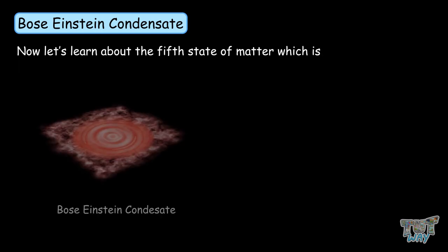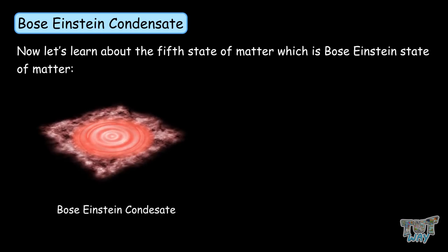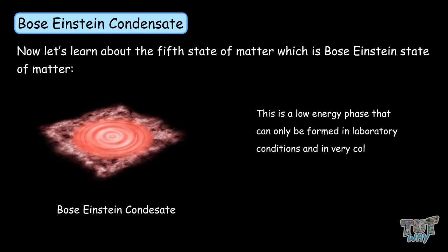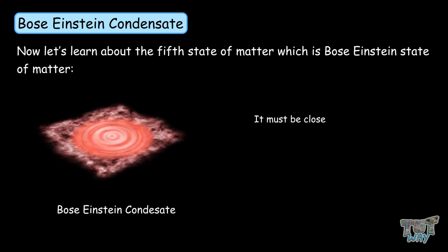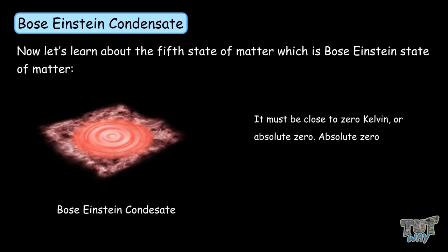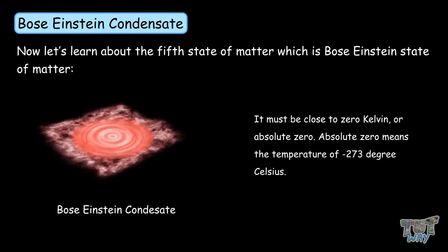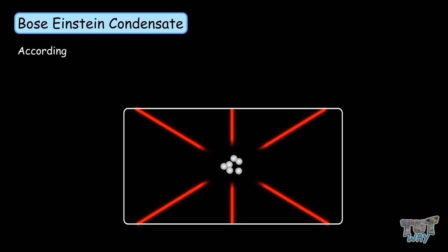Now, let's learn about the fifth state of matter, which is Bose-Einstein's state of matter. This is a low-energy phase that can only be formed in laboratory conditions and in very cold temperatures. It must be close to zero Kelvin, or absolute zero.